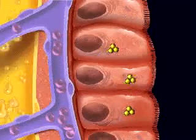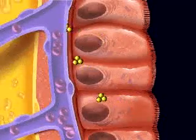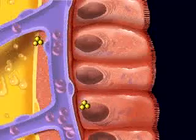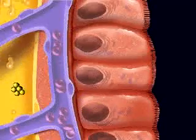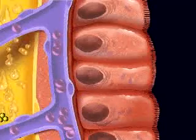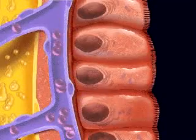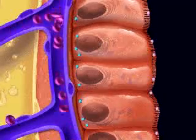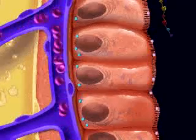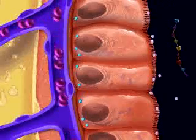Protein digestion is completed in the small intestine. Proteins are broken down first into peptides, then into amino acids. These are absorbed into the villi, then into the capillary.